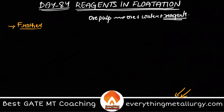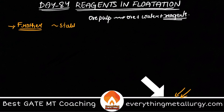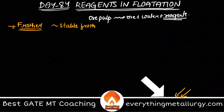What is a frother? We add small quantities of frother to produce a stable froth. In froth flotation, we agitate by blowing air into the pulp, which forms a froth. To stabilize the froth — that means to make the formation of froth easier — you add a reagent called a frother. The best example is pine oil. If you add more pine oil, more froth generation will occur.